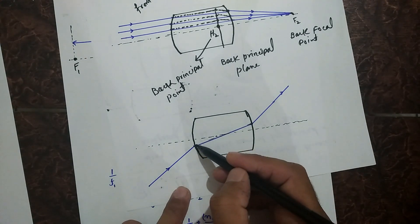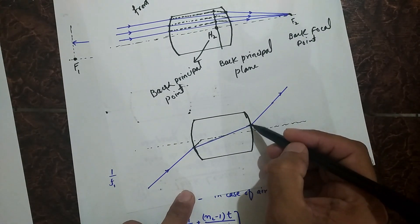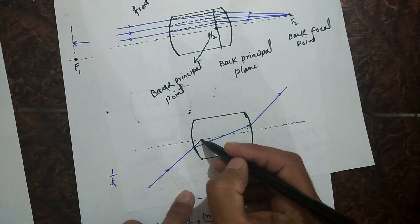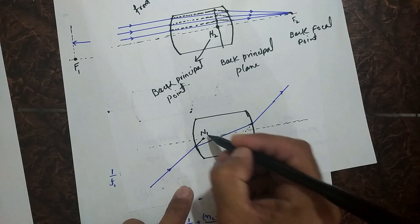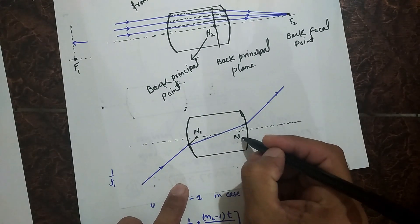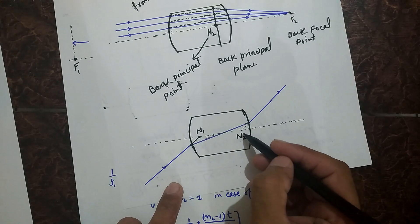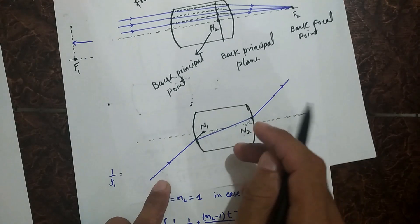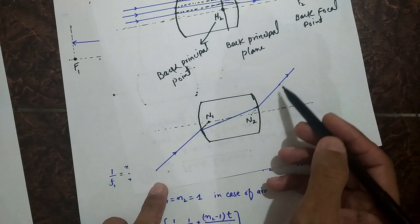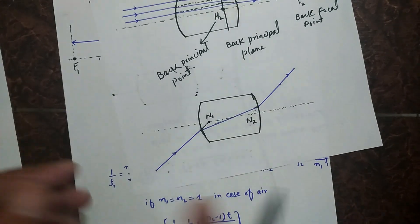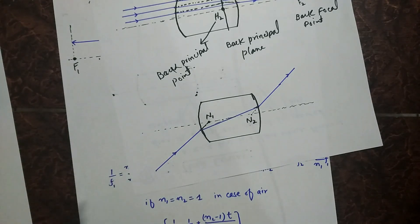If we extend the incident ray and the emergent ray, they intersect the optical axis at points usually represented by N1 and N2. These points are known as the nodal points — N1 is the front nodal point and N2 is the back nodal point. In this situation, the incident ray and the emergent ray are parallel but offset from each other.